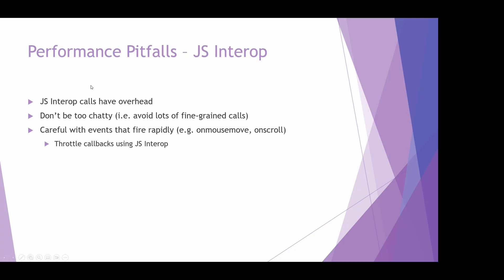For JS interop overhead: the overhead has reduced with newer .NET versions. Try not to be too chatty — if you need to update the DOM, do it in one JS call rather than individual calls for every small change. Be careful with high-frequency events like onscroll or onmousemove, as these can slow down performance significantly because Blazor is talking to JavaScript to handle all those events. You can throttle those through JavaScript and only call into Blazor when needed.